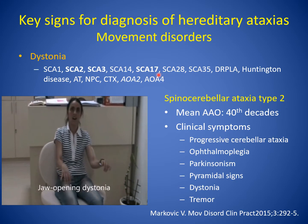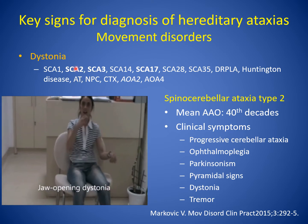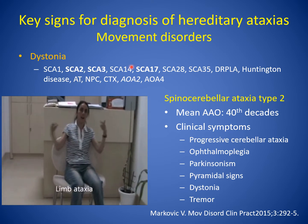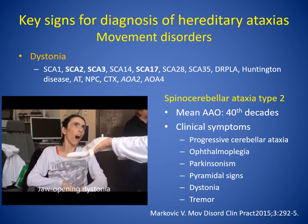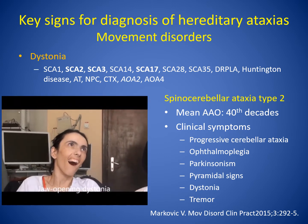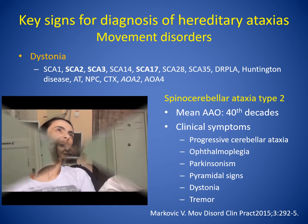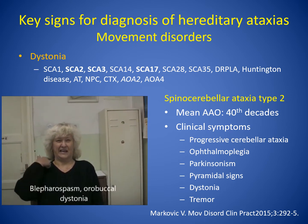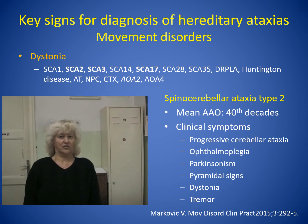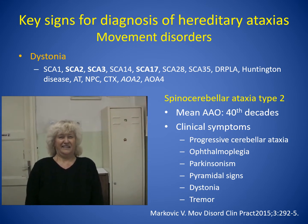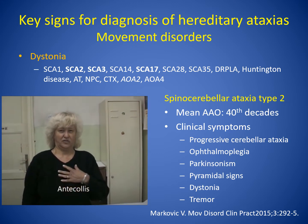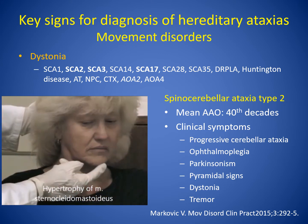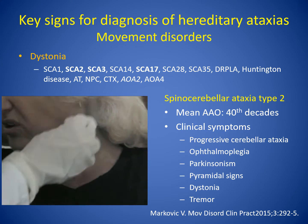These hereditary ataxia disorders, especially SCA 2, 3, and 17, can be accompanied by dystonia during the disease course. SCA 2 is characterized by progressive cerebellar ataxia and dysarthria, and Parkinsonian and pyramidal signs can be seen in some individuals. Up to 61% of patients develop dystonia during the disease course.